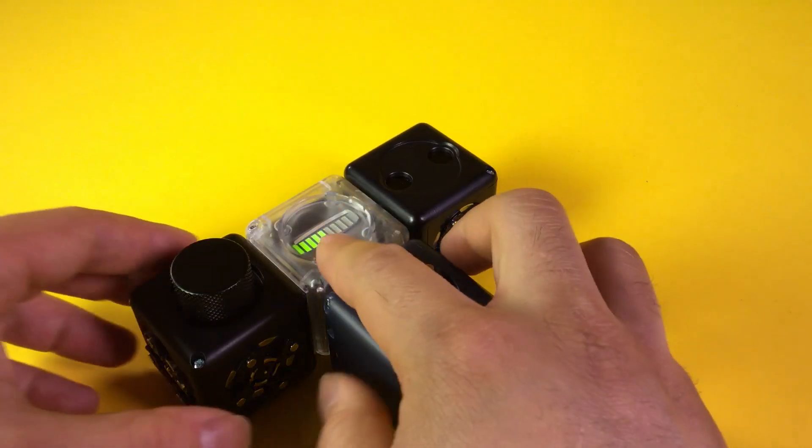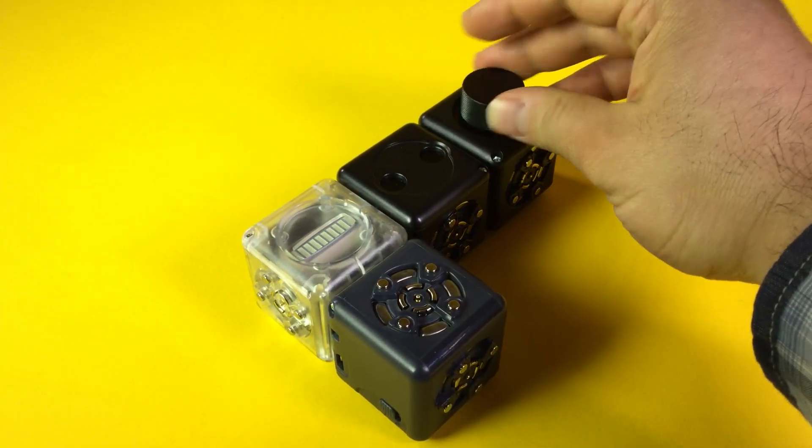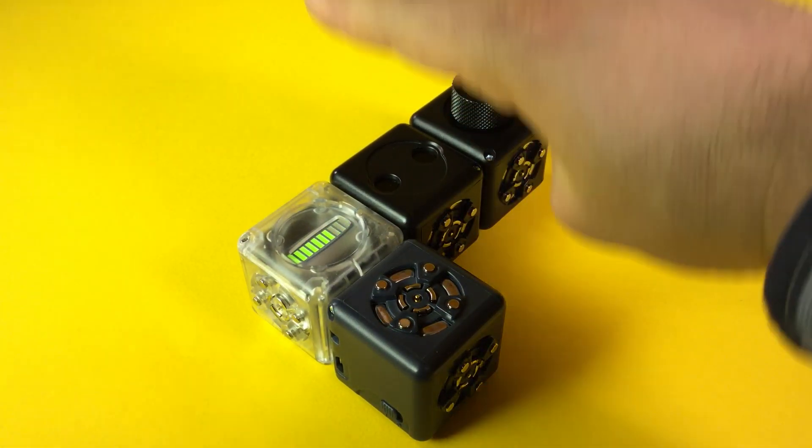Note that numbers don't flow through sense blocks. Each sense block produces its own number, so it doesn't pass numbers from its neighbors.